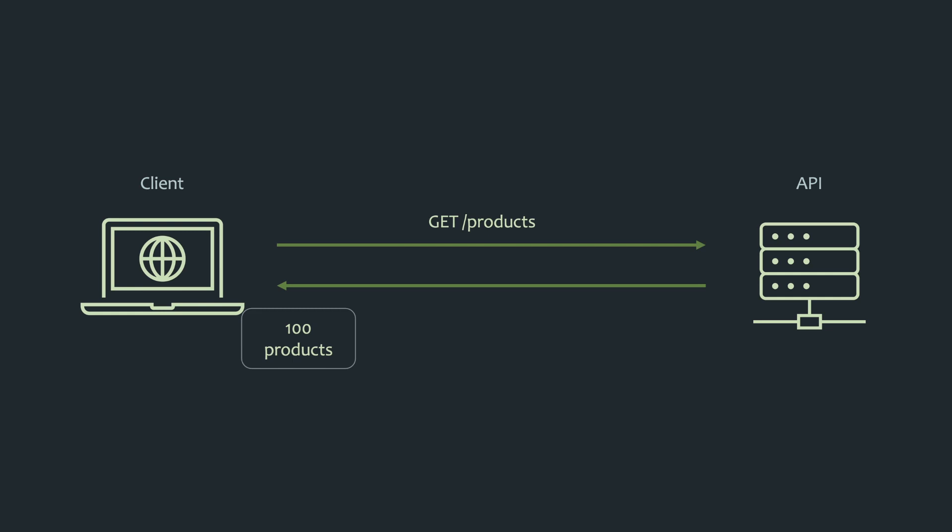API pagination is essentially a way for your API to serve data for a specific resource in batches. There are two common industry standards: offset-based pagination and cursor-based pagination. It's important to understand which one works best for your use case, as they both have pros and cons. Let's talk about these in more detail.